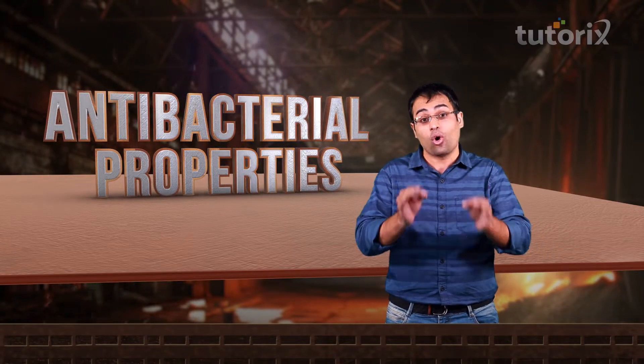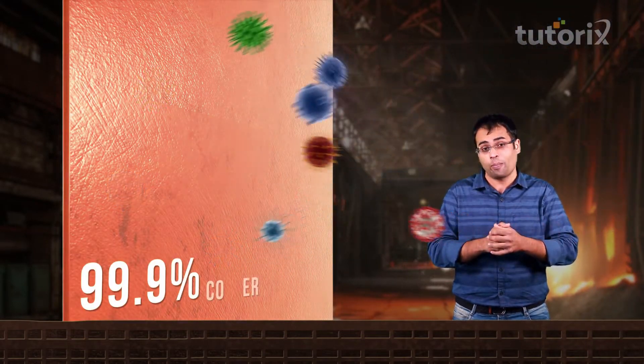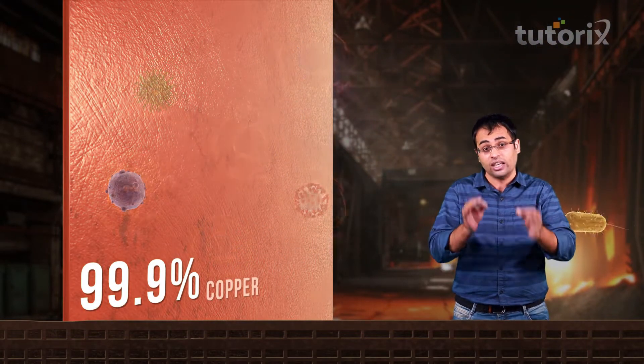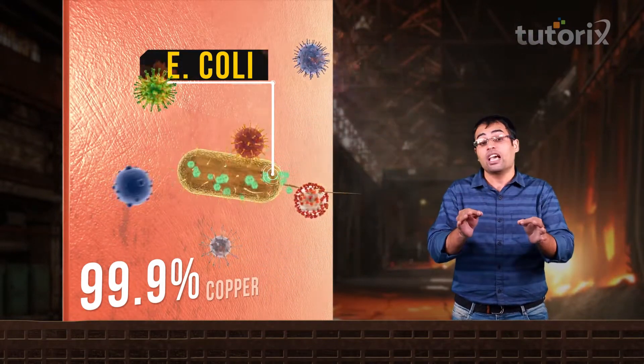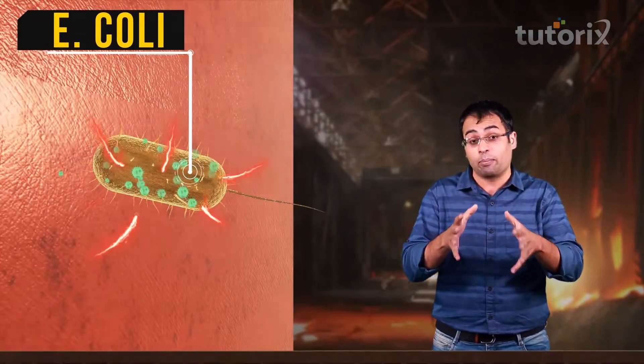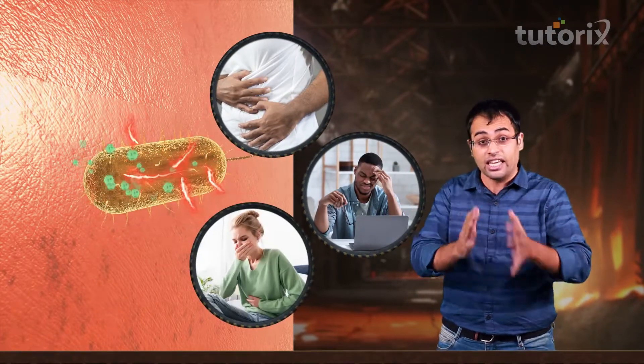According to a study, copper and mixtures of copper-containing alloys which have 99% copper are effective in killing a bacteria called E. coli. This E. coli bacteria produces toxins which can cause diarrhea, severe aches and nausea in infected people. So next time when you drink water, it is always better to drink it from a copper water bottle.